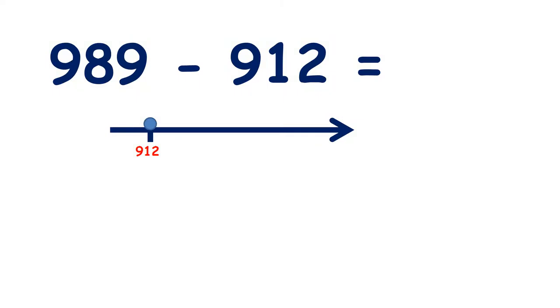We can find the difference by targeting the tens and hundreds. So here we have 989 minus 912. If we start on 912, the next multiple of 10 is 920, so we can start by adding 8.